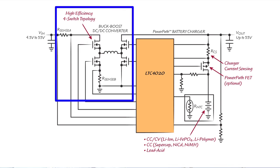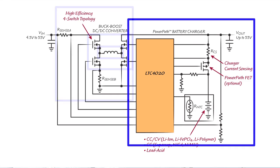The buck-boost converter employs a high-efficiency four-switch topology and requires only a single inductor. The output of the buck-boost converter directly powers system loads while simultaneously providing charge power to the battery.